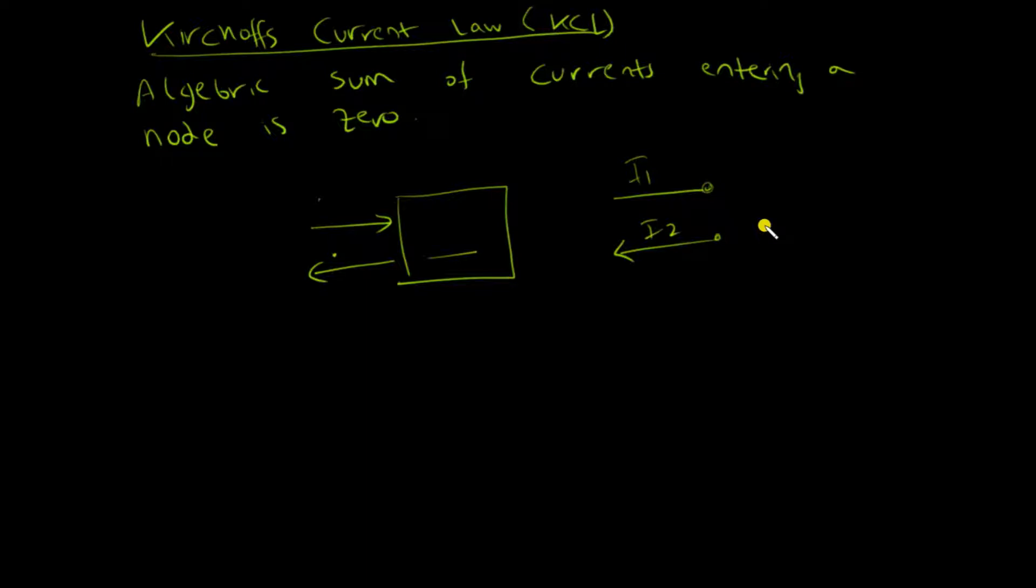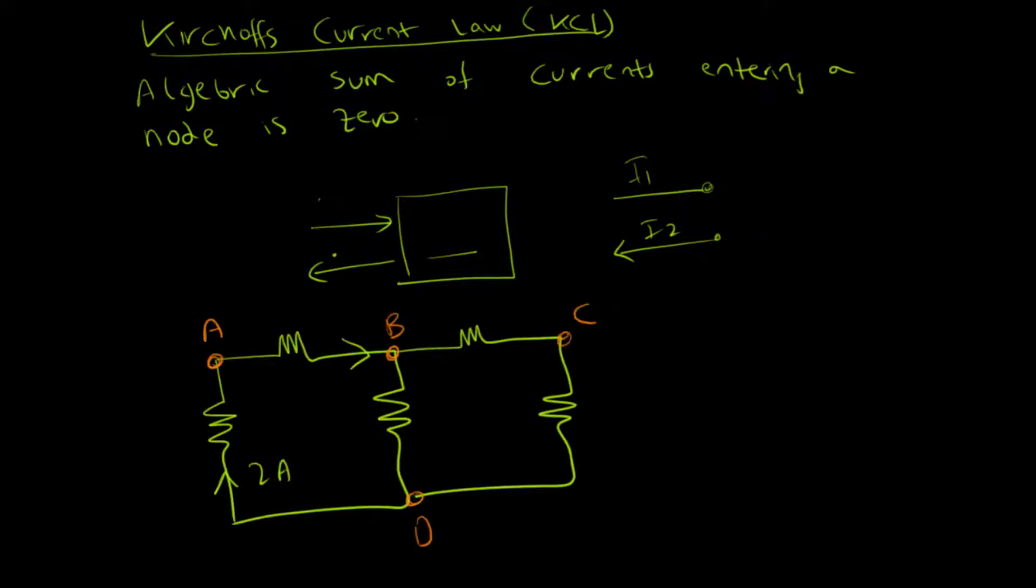Let me show you an example mathematically. If I have this circuit and I've already marked all the nodes A, B, C and D, I need to find this current I.